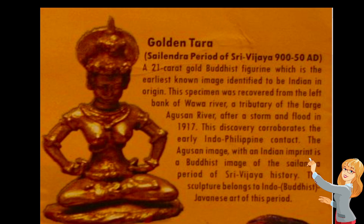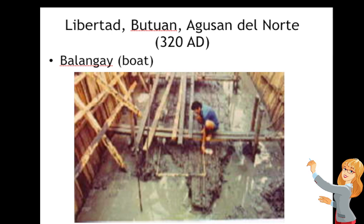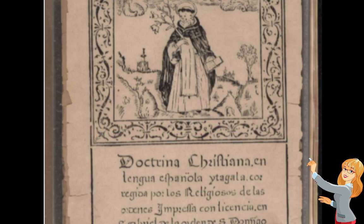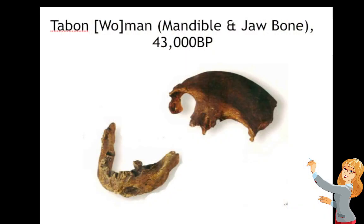We also have the Golden Tara, which indicates that the Philippines had trading relations with India, as it was found in Mindanao. We also have the balangay, or boat, found in Butuan — many were recovered there, and there is a museum in Butuan where you can see them. Additionally, we have the Doctrina Christiana, the first printed book in the Philippines, along with other remains made by people in ancient times serving as primary sources.